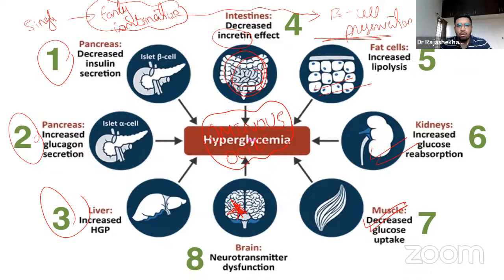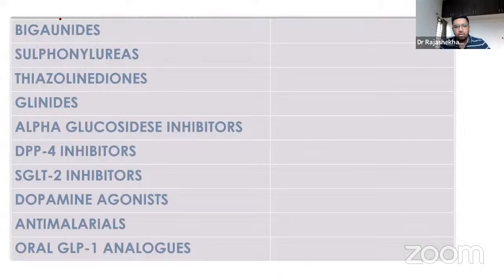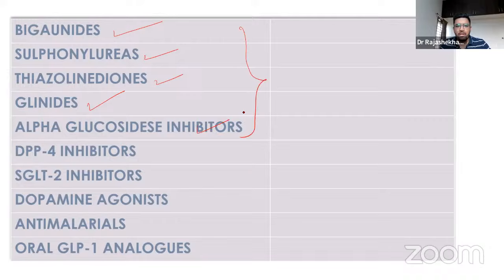The spectrum of OADs includes biguanides, sulfonylureas, thiazolidinediones, glinides, and alpha-glucosidase inhibitors — the older historical classes. More recent additions include incretin-based therapy via DPP-4 inhibitors, SGLT2 inhibitors, dopamine agonists, and anti-malarials like hydroxychloroquine. We now also have oral GLP-1 analogues.